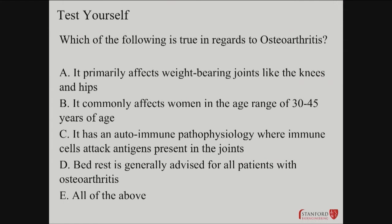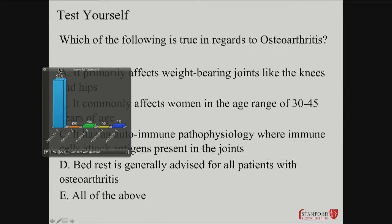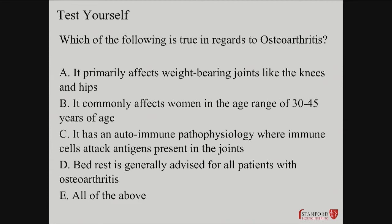Test question: which of the following are true for osteoarthritis? It primarily affects weight-bearing joints like the knees and hips — that's correct. The other options — commonly affects women age 30 to 45, has an autoimmune pathophysiology where immune cells attack joint antigens, and bed rest is generally advised — those are all characteristics of rheumatoid arthritis, not osteoarthritis. Activity is very helpful for OA. That's a key distinction.